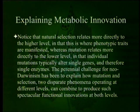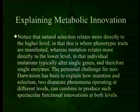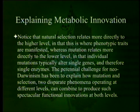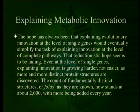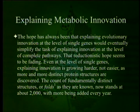Natural selection relates more directly to the higher level, in that this is where phenotypic traits are manifested, whereas mutation relates more directly to the lower level, in that individual mutations typically alter single genes and therefore single enzymes. The perennial challenge for Neo-Darwinism has been to explain how mutation and selection — two disparate phenomena operating at different levels — can combine to produce such spectacular functional innovations at both levels. The hope has always been that explaining evolutionary innovation at the level of single genes would eventually simplify the task of explaining innovation at the level of complete pathways. That reductionistic hope seems to be fading.